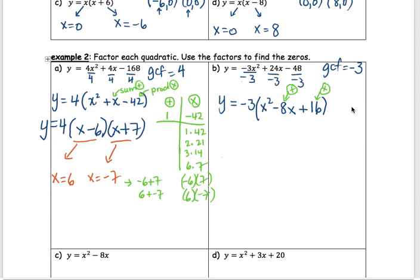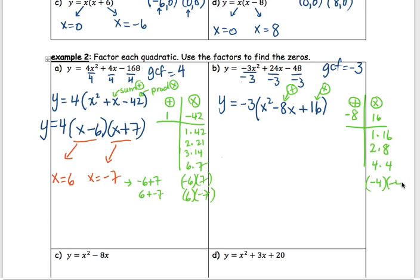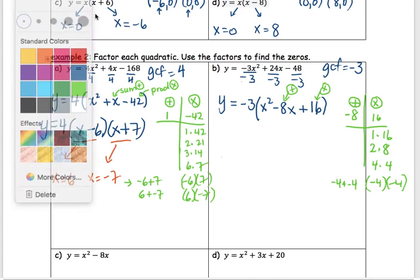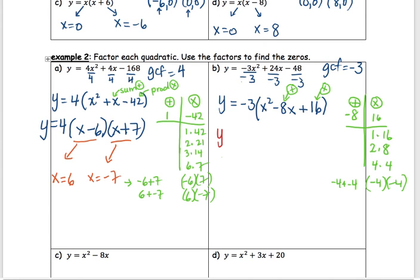Don't stop here — make your product-sum table. This is the one you have to add to, and this is the one you have to multiply to. Our conditions: add to negative 8, multiply to positive 16. Going through: 1 times 16, 2 times 8 — neither makes 8. 4 times 4 makes 16. But we need negative 8, so we need both to be negative. Negative 4 plus negative 4 equals negative 8. So we found our two factors: negative 4 and negative 4. Writing it out: negative 3 times (x minus 4)(x minus 4).